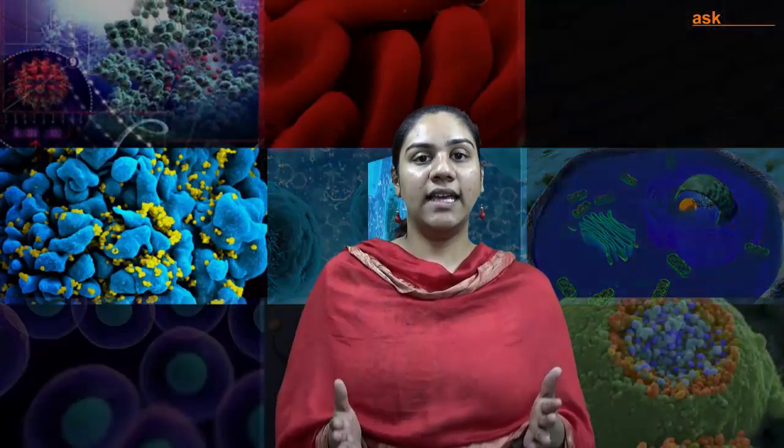Hello students, welcome back. In this part we will discuss about the endomembrane system, which includes organelles like endoplasmic reticulum, Golgi bodies, vacuoles, and lysosomes. Why only these organelles are included in the endomembrane system, you will get to know at the end of this part. So let's start.